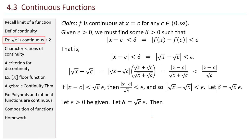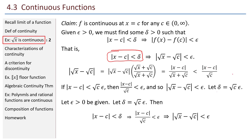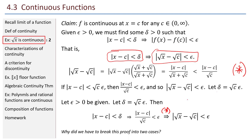Let epsilon greater than zero be given. Let delta equal square root of C times epsilon. Then absolute value of X minus C less than delta implies — replacing delta with its value and dividing both sides by square root of C — that absolute value of square root of X minus square root of C is less than epsilon. Given an epsilon, we have found the delta that makes this implication true. One last question: why did we have to break this proof into two cases? Take a look back at the proof and see why we needed two cases instead of tackling it all at once.